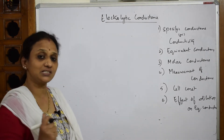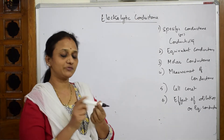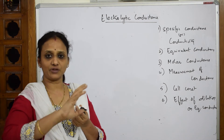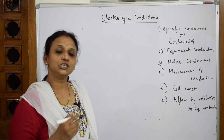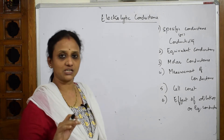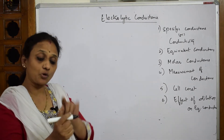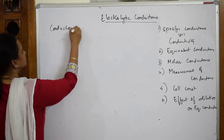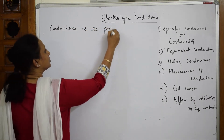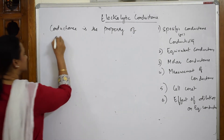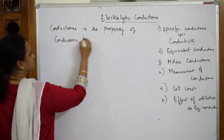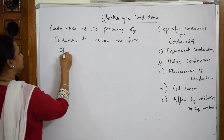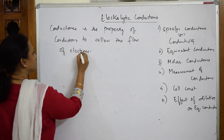Now let us start by defining what actually is conductance. Suppose if I take a metallic piece — basically, why do we call metals as good conductors? Because they allow the flow of current, or rather the flow of electrons. So conductance is a property of this metal that allows the flow of electrons.